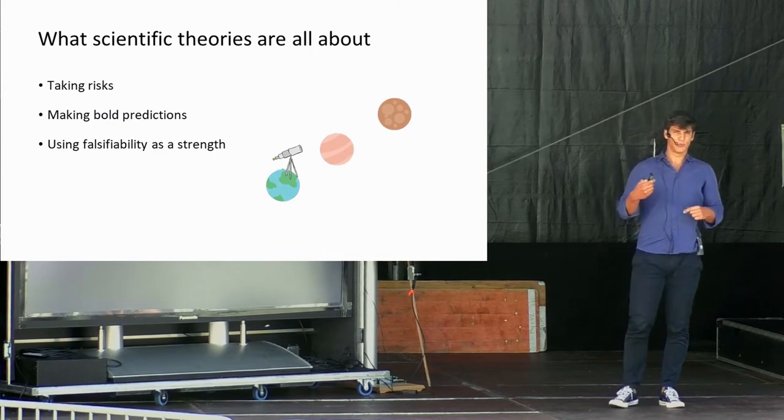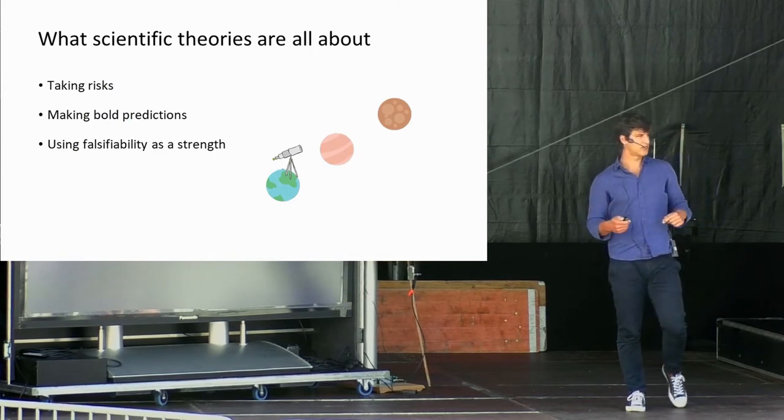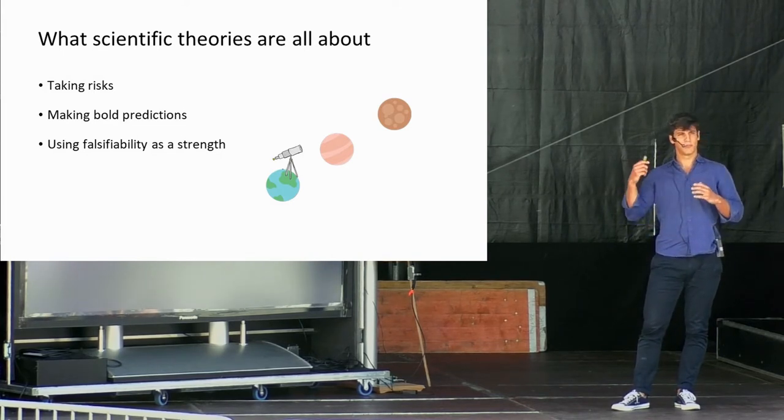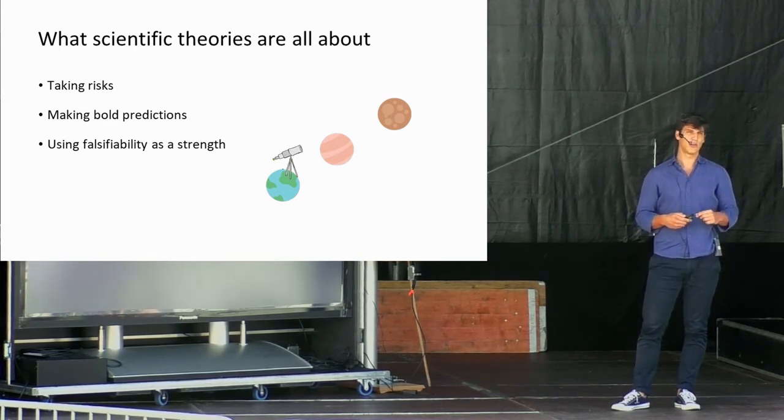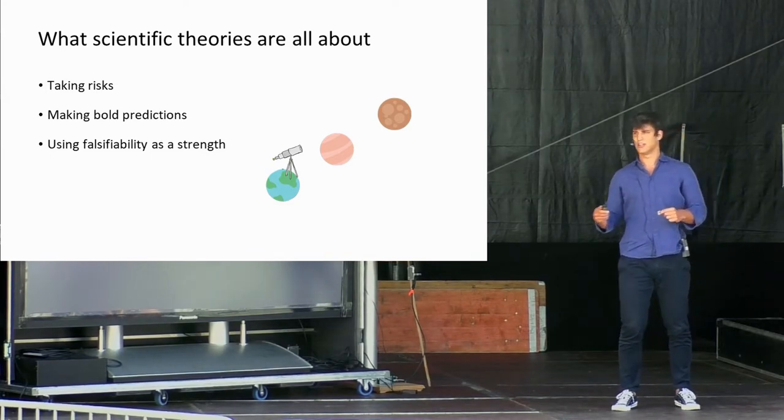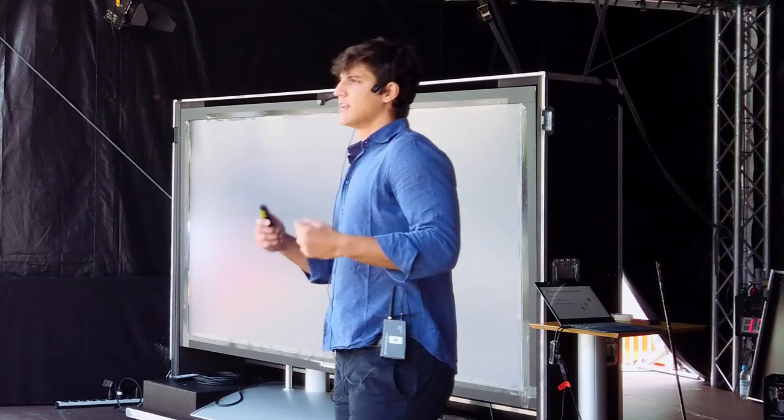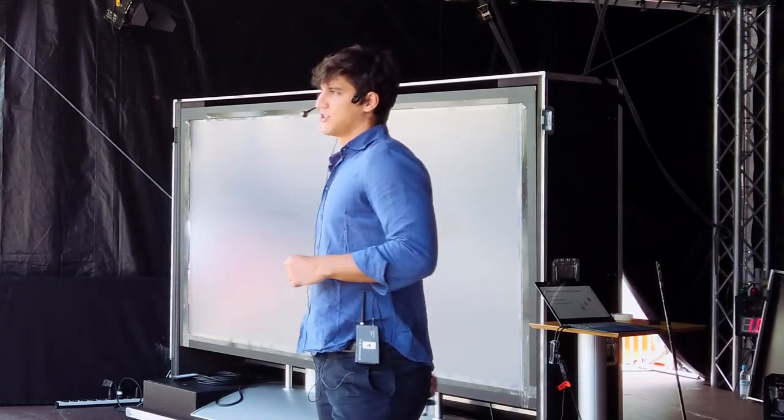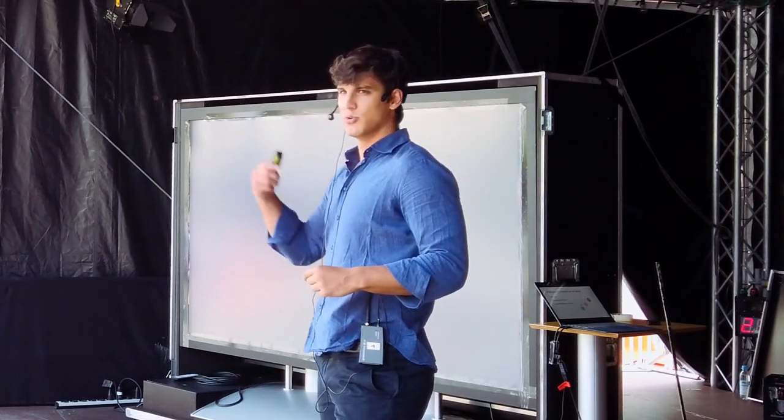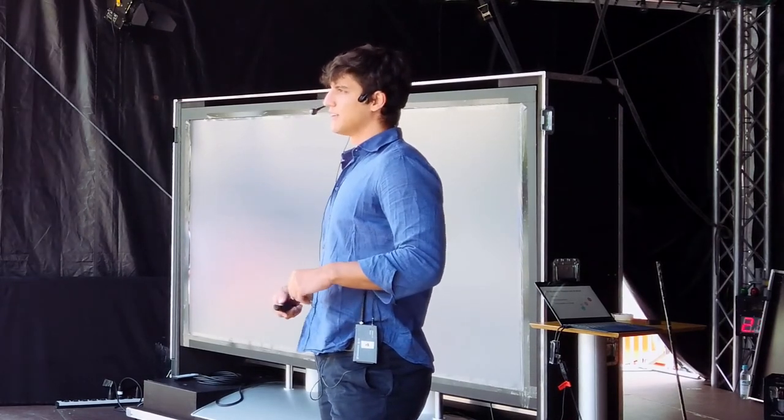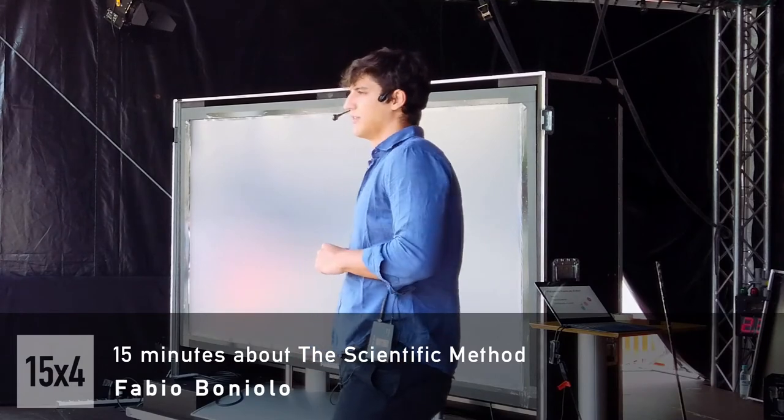As you saw with theory number one, scientific theories are all about taking risks. We have to think of ways that might prove our theory wrong and then test if the theory is actually wrong. Moreover, scientific theory makes bold predictions. We try to falsify our theory, and until we cannot do that, we think of the theory to be true, and we believe in our theory.